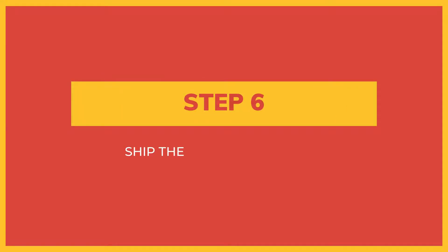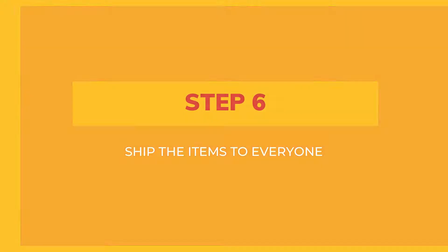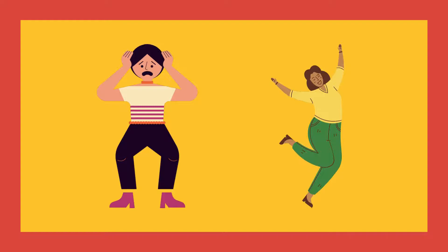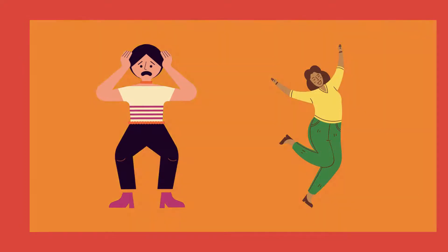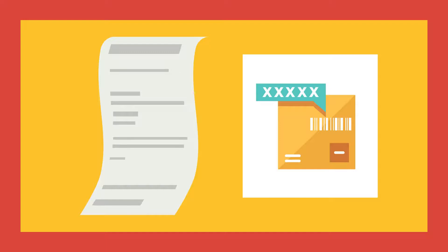Step 6: Ship the items to everyone. Group order participants usually get anxious and excited during this time, so it would be good if you provide them a local shipping receipt with a tracking number. With this, they can track the items themselves.